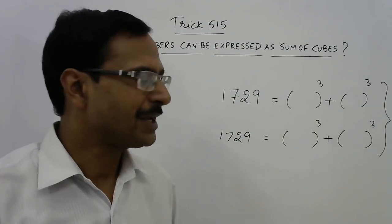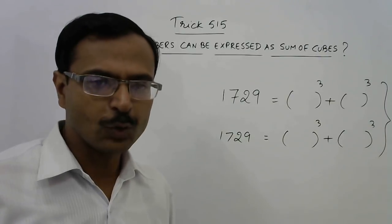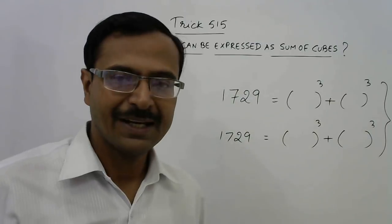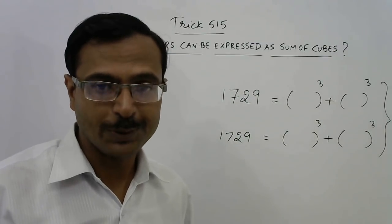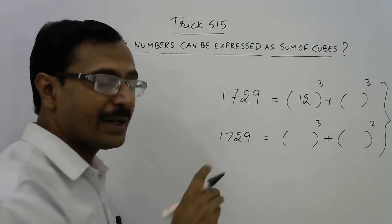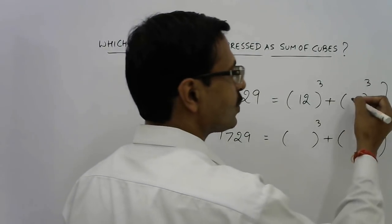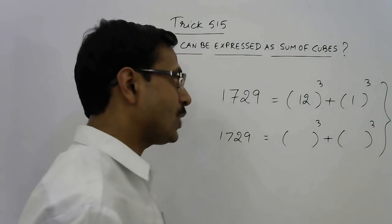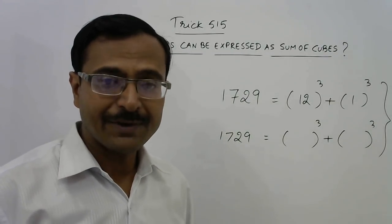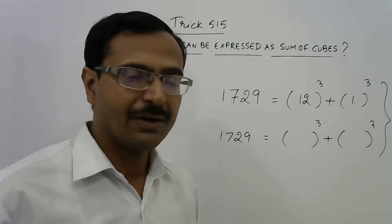The first is very clear. If you are aware of the cubes of very small numbers, then 1728 is a perfect cube, and the cube of 12 is actually 1728, and obviously 1 is left behind, so 1 cube is 1. So 12 cube plus 1 cube will give us 1729, and further just by observation you can tell me the other one also.